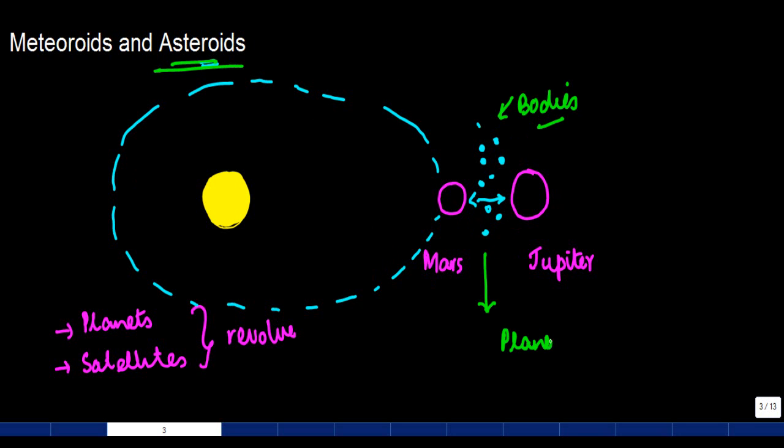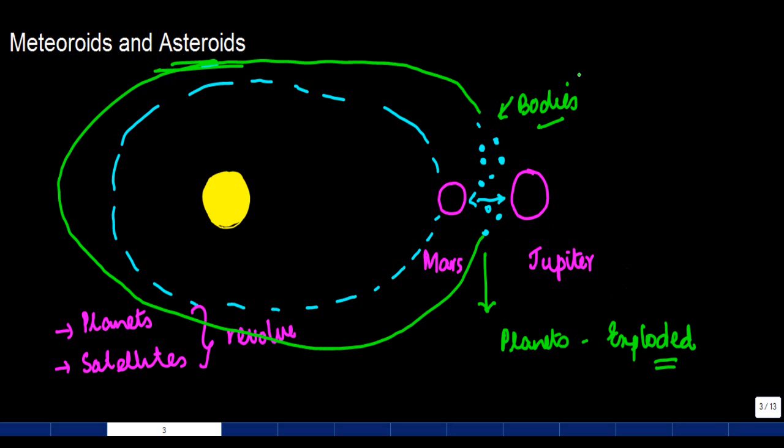but according to scientists, there were some planets which exploded many years ago. These are basically the remains of the debris, if you may call it, of those planets. They also keep on rotating around the Sun, so these are bodies when we talk about asteroids.